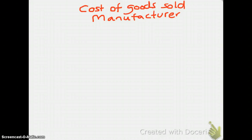A manufacturer and a merchandiser both have inventory, but they have different types. A merchandiser only has one type of inventory — merchandise inventory. They buy it from others in order to resell it to customers. A manufacturing company, on the other hand, has three types of inventory: raw material inventory, work in process inventory, and finished goods inventory.